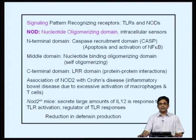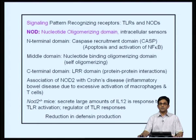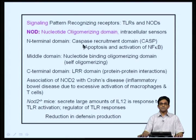There are two main types of signaling pattern-recognizing receptors: the TLRs and the NODs. The NODs are the nucleotide oligomerizing domain receptors — these are intracellular sensors. Most TLRs like TLR2 and TLR4 are present on the cell surface; some TLRs such as TLR9 are present in endosomes, but NODs are primarily intracellular sensors. They sense microbial pathogens within cells and are characterized by particular domains. NOD proteins contain an N-terminal domain with the CARD (caspase recruitment domain), important in apoptosis and activation of NF-κB.